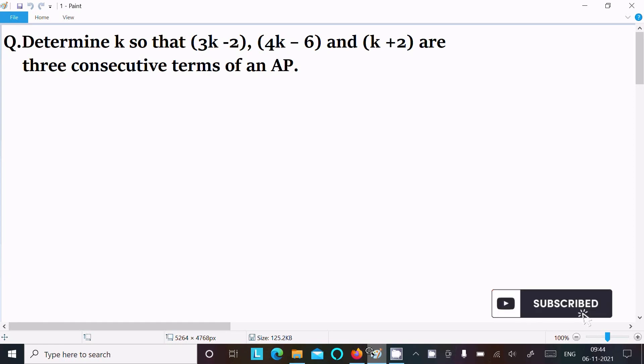In this video lecture I am going to determine k so that (3k-2), (4k-6), and (k+2) are three consecutive terms of an AP. Let's see the answer. First, writing (3k-2),